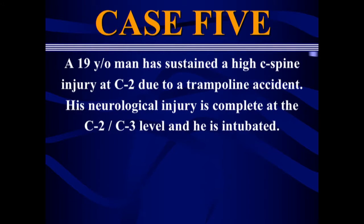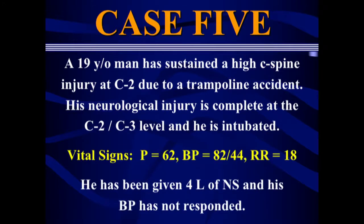Case five: a 19-year-old man with a high C-spine injury at C2-C3 due to a trampoline accident. Neurological injury is complete at C2-C3. Vital signs: pulse 62, blood pressure 82/44, respiratory rate 18. He's received four liters of normal saline without blood pressure response. These patients have woefully low blood pressures, make urine, and talk to you normally — which is freaky when everyone else with those vitals is intubated and circling a drain. It's predominantly a testosterone-associated event — about 9-to-1 male predominance.